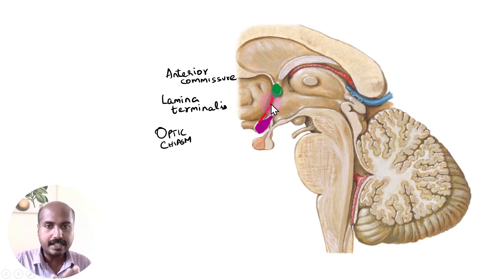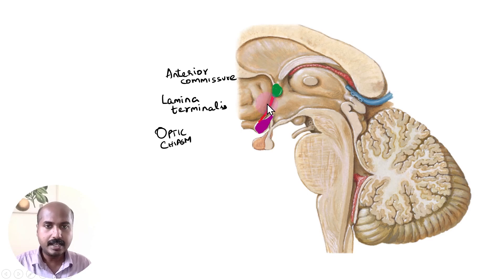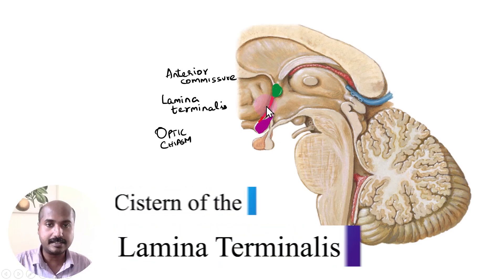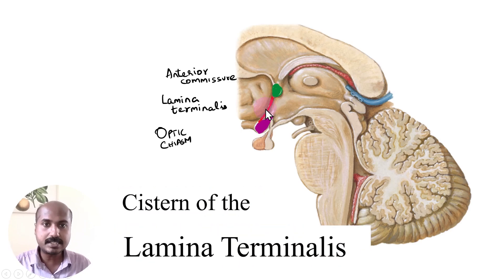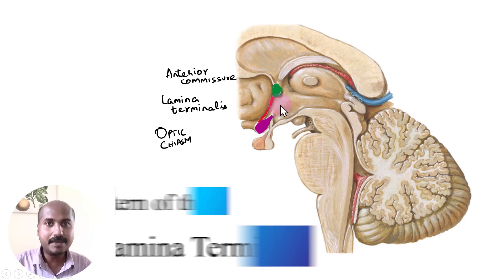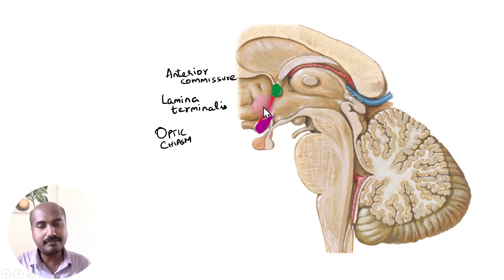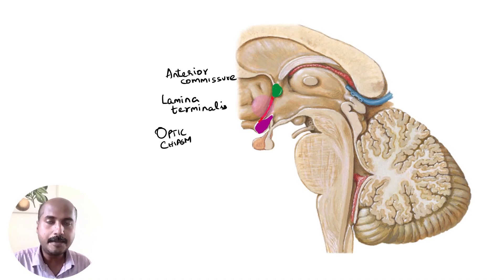In front of the lamina terminalis is the paraterminal gyrus, as mentioned in an earlier video. Here you have the subarachnoid space — specifically the subarachnoid cistern near the lamina terminalis — known as the cistern of the lamina terminalis. In front you have the cistern of the lamina terminalis, and behind you have the third ventricle. Both contain CSF: CSF inside the third ventricle, and CSF in the cistern of the lamina terminalis, which is an expanded subarachnoid space.